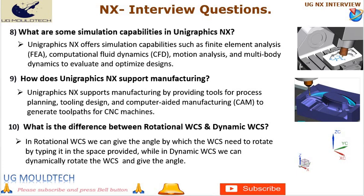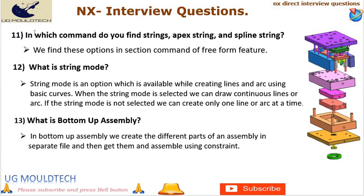Next point in UniGraphics NX is number 11. In which command do you find strings, apex string, and spline string? We find these options in the section command of freeform feature. Next point is number 12. What is string mode? String mode is an option available while creating lines and arcs using basic curves. When string mode is selected, we can draw continuous lines or arcs. If string mode is not selected, we can create only one line or arc at a time.